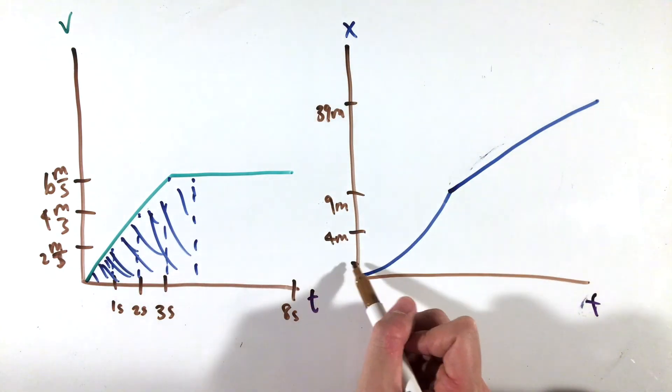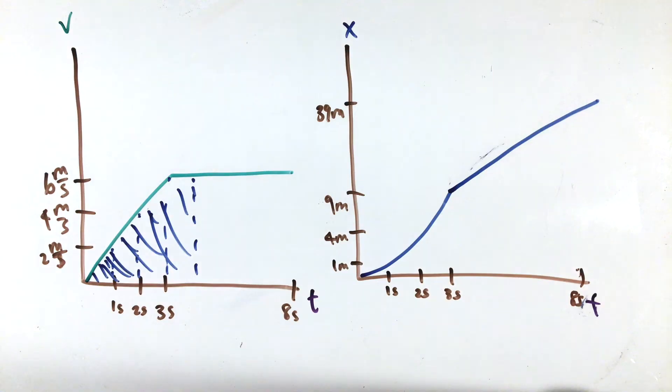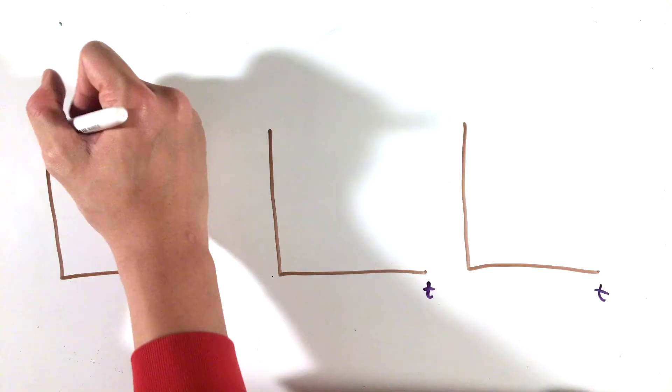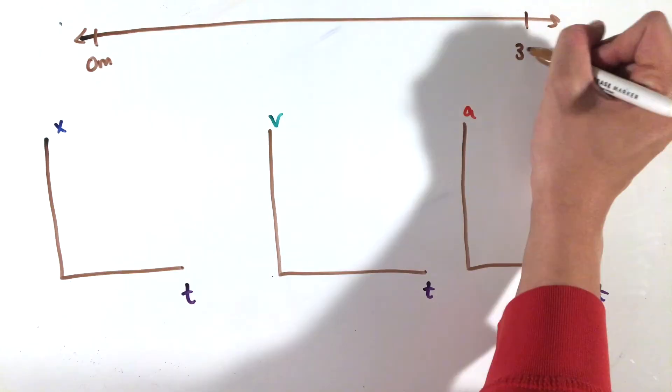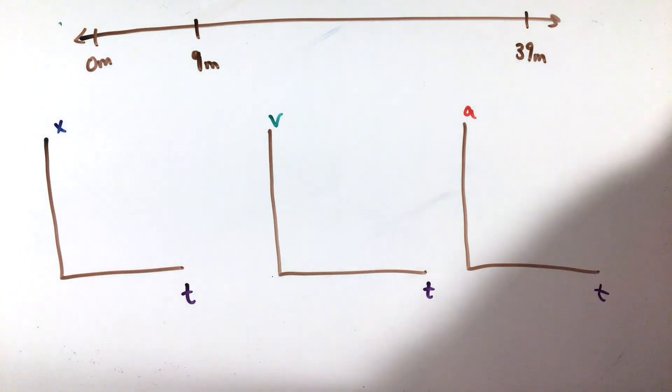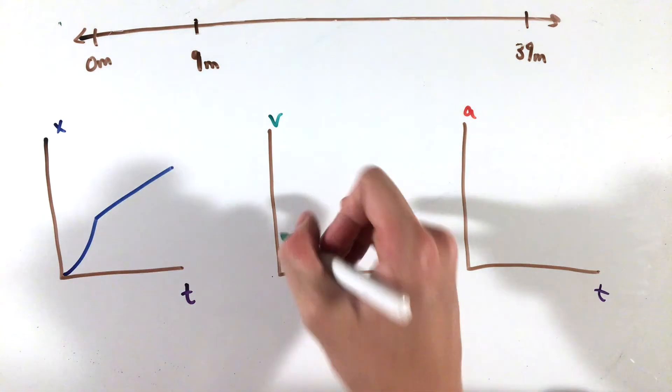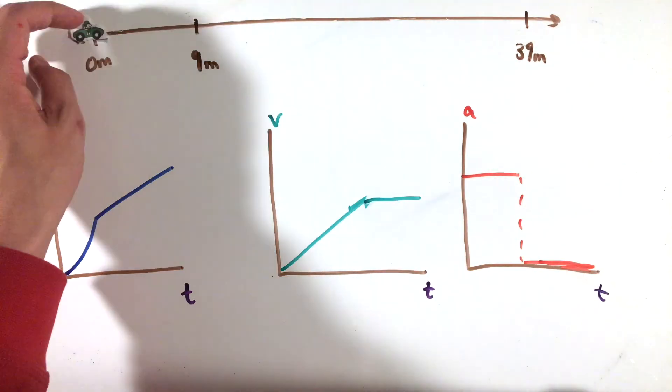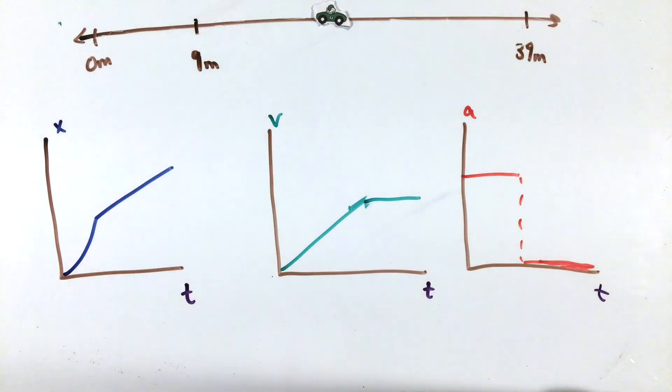To describe the motion of this car, let's essentially walk ourselves through the graphs we graphed. At time 0, the object starts to speed up, moving farther away from the starting point in the positive direction at a faster and faster rate. At time equals 3 seconds, the object begins to coast at a constant velocity of 6 meters per second, uniformly moving away from the starting point in the same direction as it originally was going.